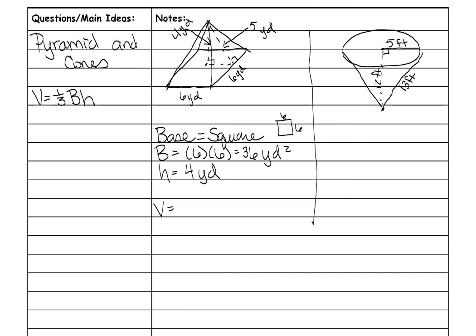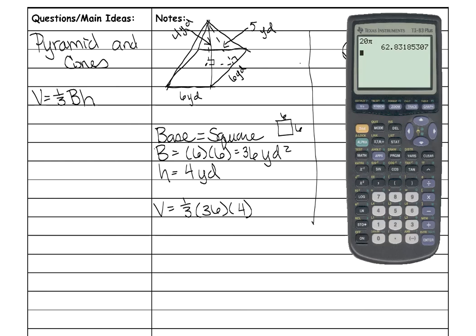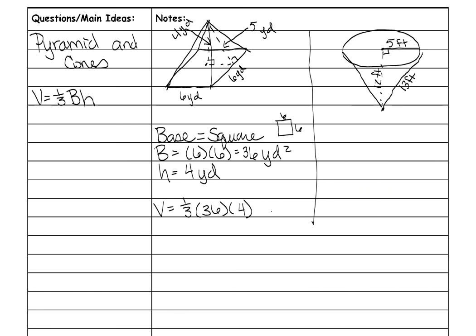And then for volume, you do 1 3rd, the area of your base, which is 36, times your height, which is 4. And you can put all this in your calculator. The 1 3rd would just be open parentheses and 1 divided by 3, like that. Times 36 times 4, which is 48 yards cubed. And that's your pyramid.